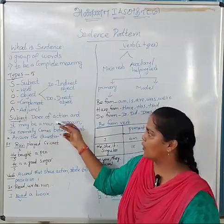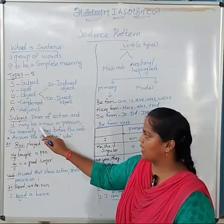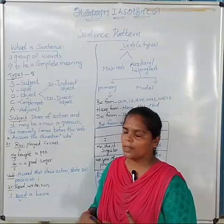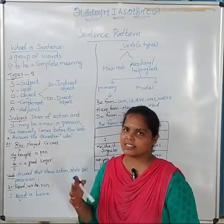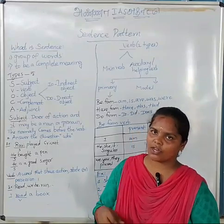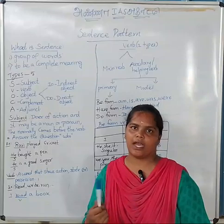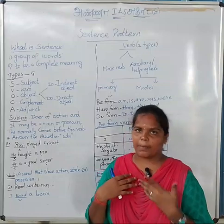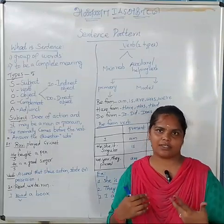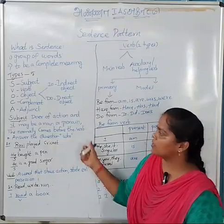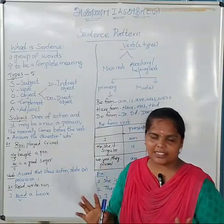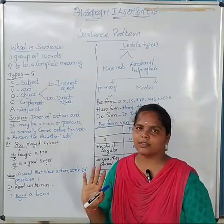What is the meaning of subject? The doer of action — it may be a noun or pronoun. From the previous class, what is a noun or pronoun? Name of a person, place, or thing. For example, a pen — this is a noun. If you refer to a girl or a pen, you say 'she' or 'it' — that is the pronoun. The noun comes before the verb. In most sentences, the subject is a noun or pronoun.